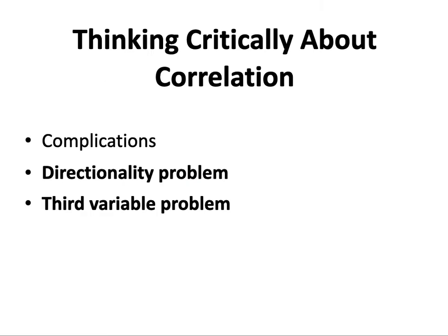Thinking critically about correlations: complications prevent researchers from drawing causal conclusions from correlational studies. Two such complications are the directionality problem and the third variable problem. The directionality problem occurs when researchers find a relationship between two variables but cannot determine which variable caused changes in the other. For example, sleep and stress are correlated — but does less sleep cause more stress, or does more stress cause less sleep?